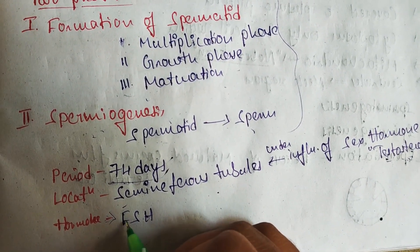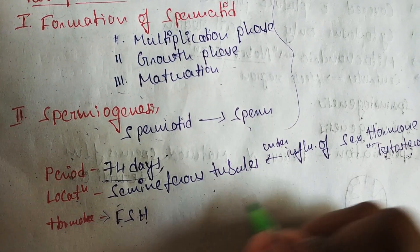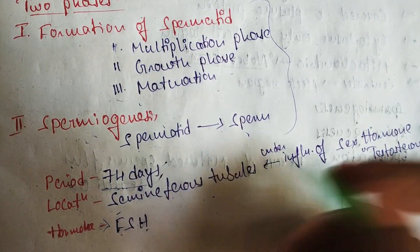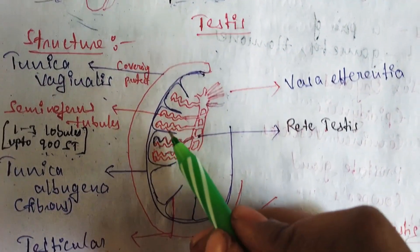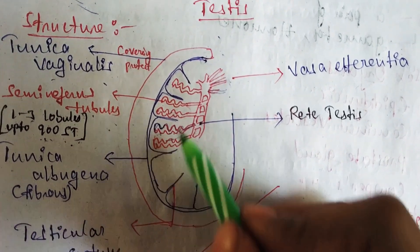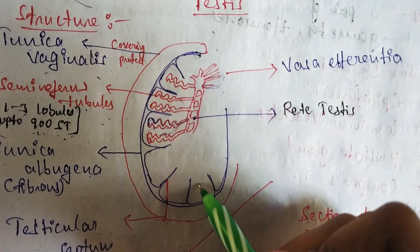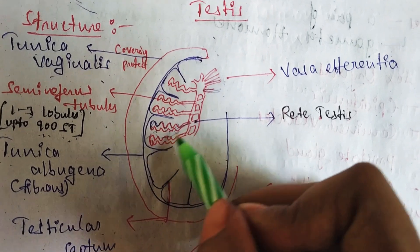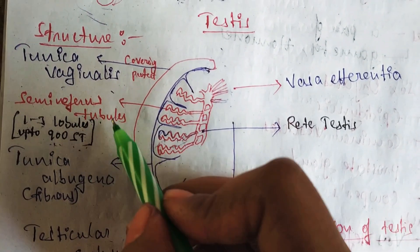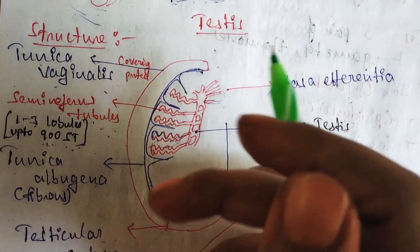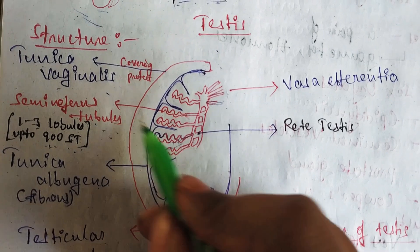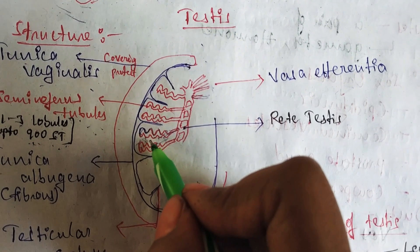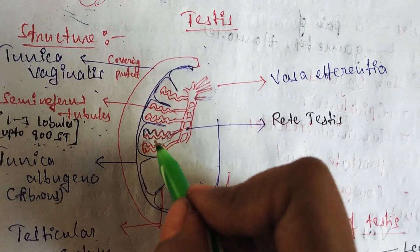The hormones involved in spermatogenesis — the main hormone is follicle stimulating hormone, which stimulates the testosterone hormone. Testosterone is helpful in the formation of sperms. The seminiferous tubules are divided into compartments by the testicular septum, and each compartment contains one to three lobules with tube-like structures called seminiferous tubules.